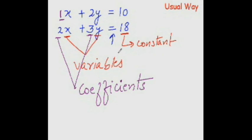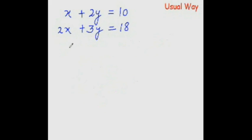Now let's see the usual way of solving simultaneous equations. There are a couple of ways, like elimination method and substitution method. I would be using the elimination method. Basically, in elimination method, all we try to do is eliminate one variable out of the two — like x and y — so one variable would be eliminated.